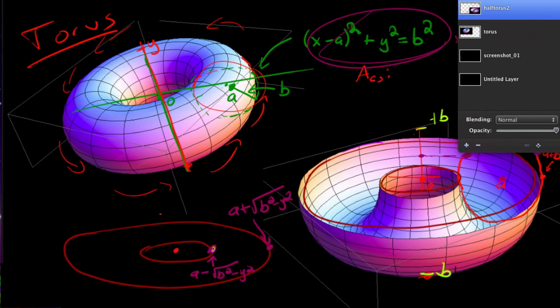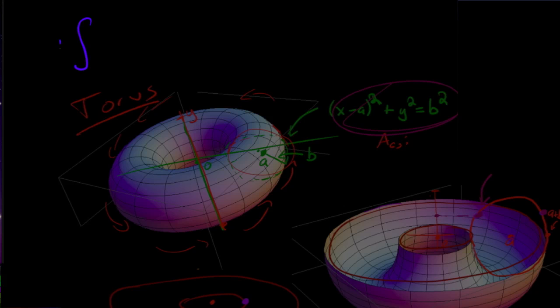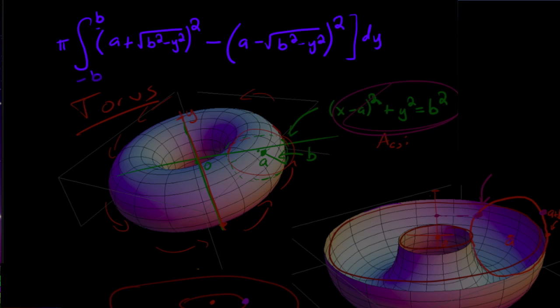And so then my integral is going to look like the integral of pi. It's going to go from negative b to b. And then it's going to be the big radius squared which is a plus the square root of b squared minus y squared squared. So pi r squared. Minus the small radius which is a minus the square root of b squared minus y squared squared. And all of this is going to be with respect to y.